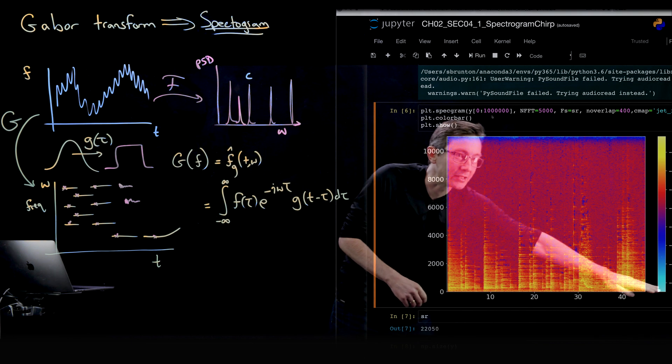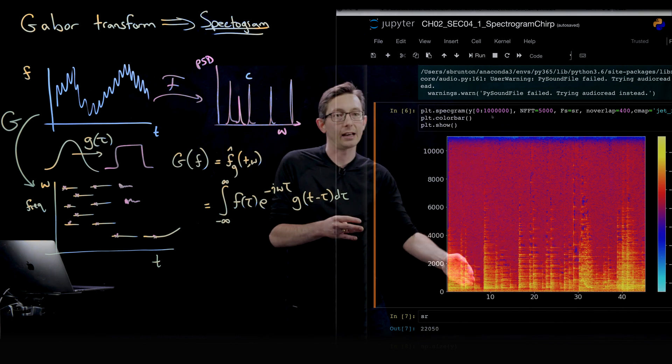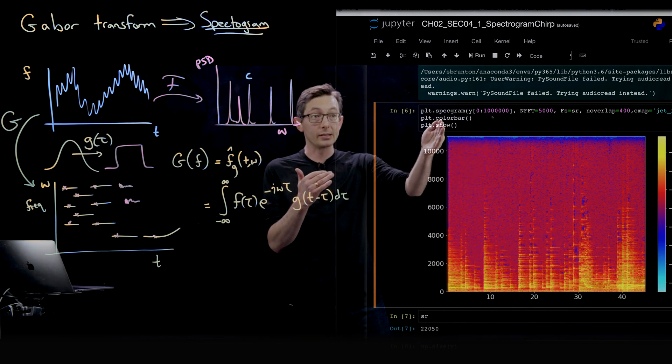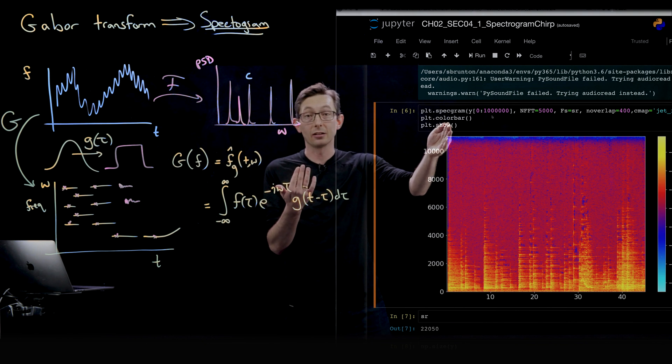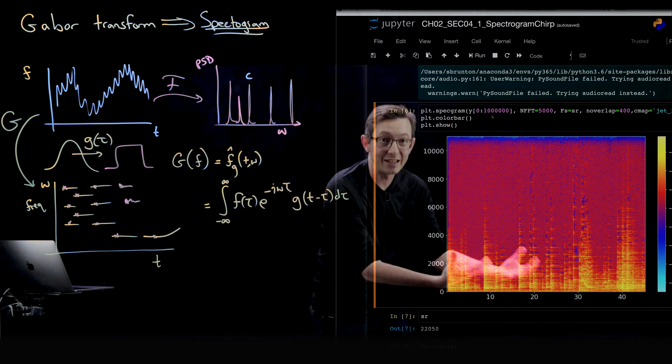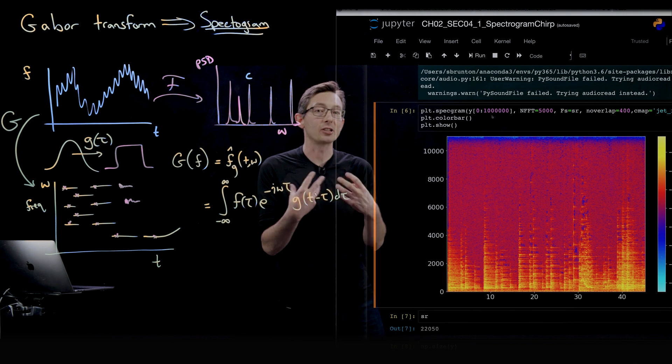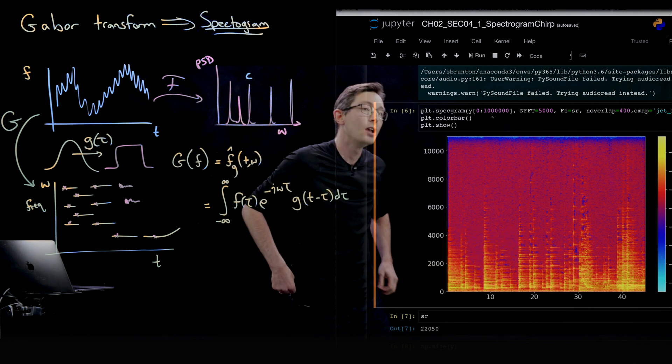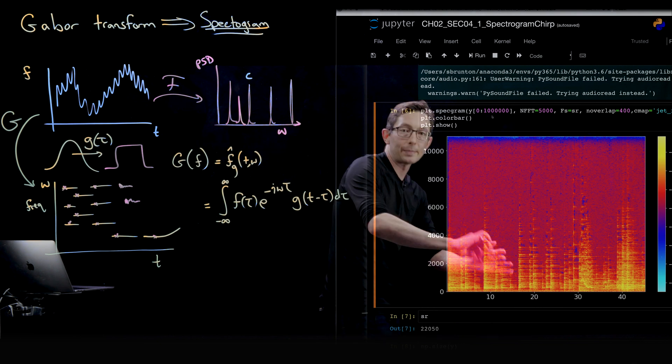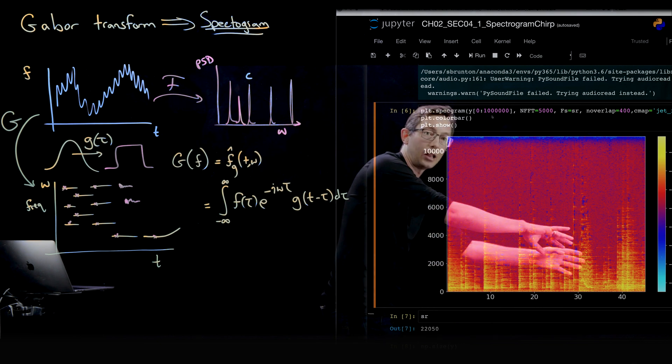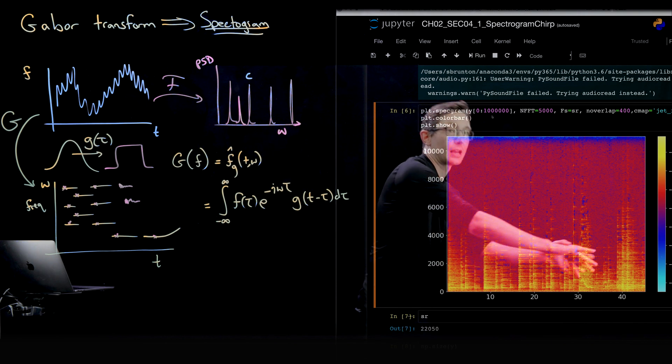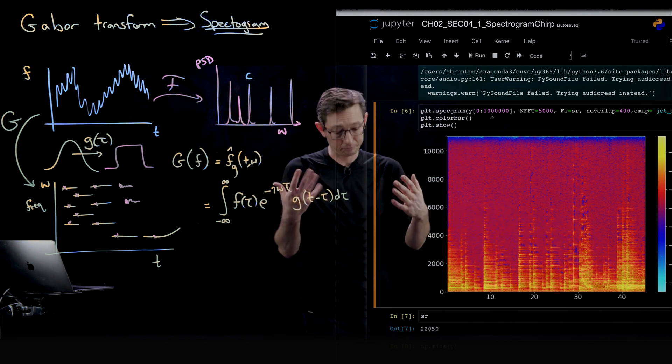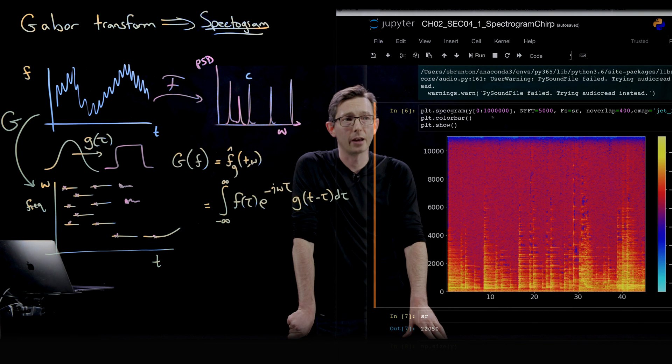And on the x-axis we have time up to about 45 seconds. On the y-axis we have frequency up to about 11 kilohertz. And again, the color, the intensity tells you how much power, how much audio power is in each of those frequencies at each instant in time. And so these really bright yellow peaks correspond to individual keys being played in this progression in time as the audio goes on.